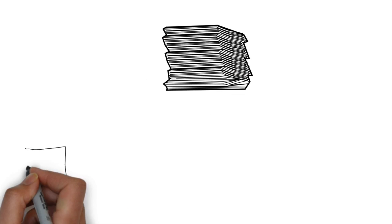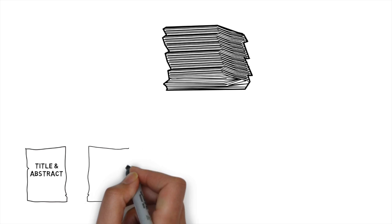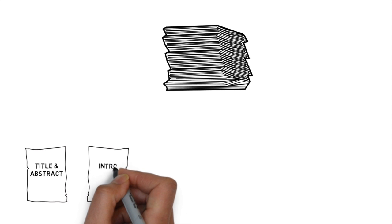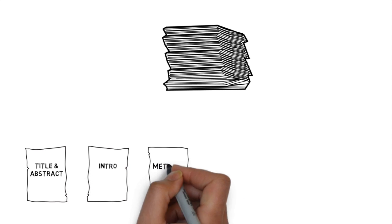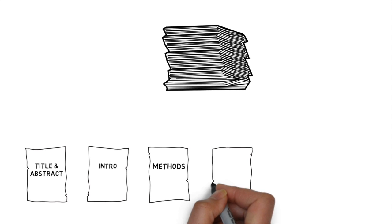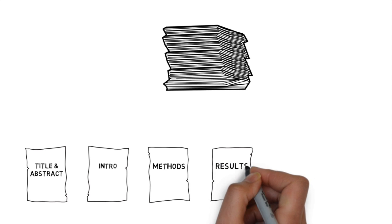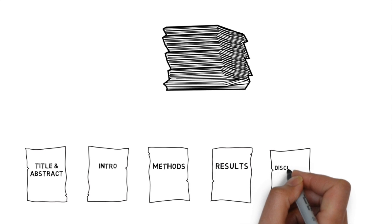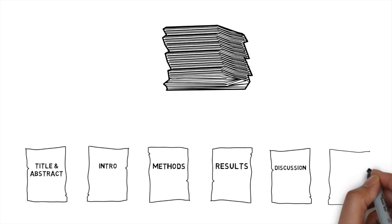The good news is, most research papers, whether it's a randomized control trial or a systematic review meta-analysis or whatever, are divided into the same six sections. You have your title and abstract, your introduction, your methods, the results section, the discussion, and then finally, the author's conclusions.